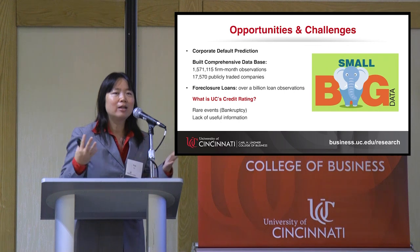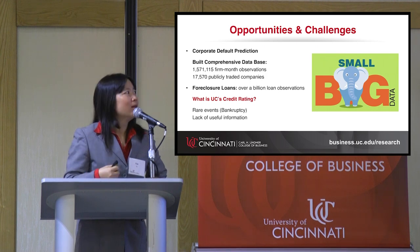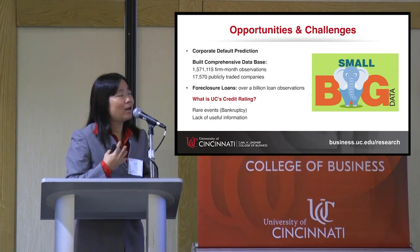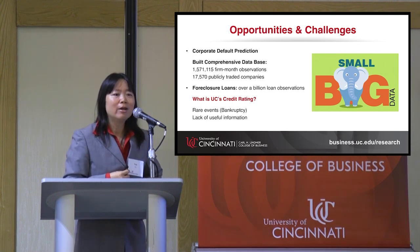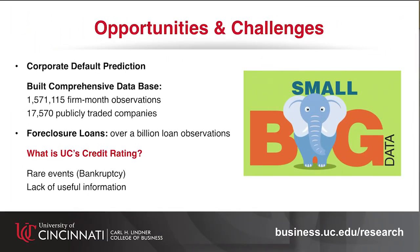I'm a data person. People talk about big data and data science, but I want to say it's not about big data or small data. There are lots of opportunities and challenges in this area. The corporate default prediction database we compiled has over 1.5 million firm-month observations. In a separate work with collaborators at the Office of the Comptroller of the Currency, we studied foreclosure loans with over a billion loan-month observations — that's huge data, made possible thanks to current advancements in computing power. But huge data does not necessarily contain all the information we need.